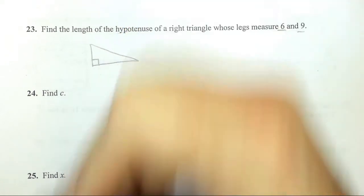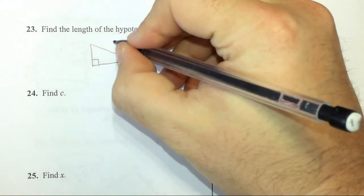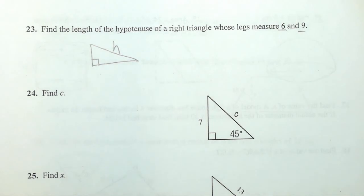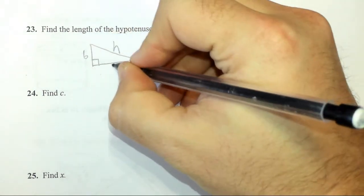I've got a right triangle. My hypotenuse over here is going to be H. The leg measures are 6 and 9.